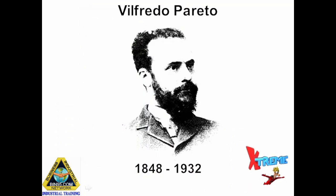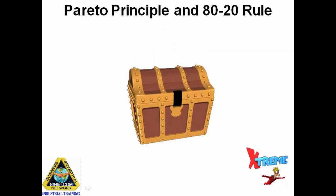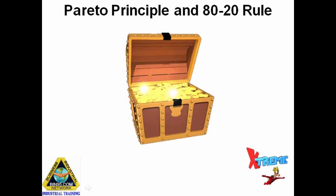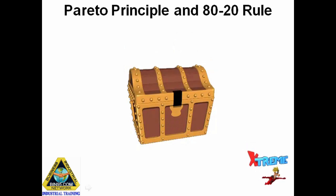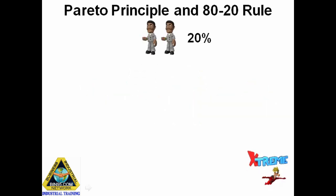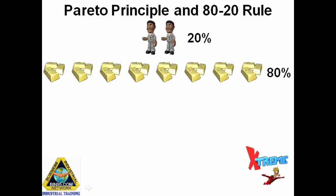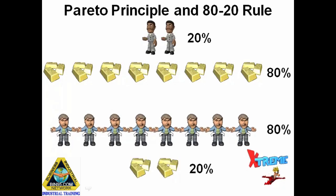Vilfredo Pareto was an Italian economist that observed the unequal distribution of wealth in his country. Vilfredo Pareto observed that not everyone in his country shared the same amount of wealth. There were far more poor people than rich. He actually created a mathematical formula that said 20% of the people owned 80% of the wealth, and 80% of the people owned 20% of the wealth.